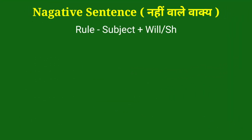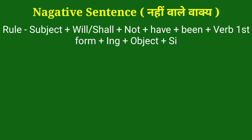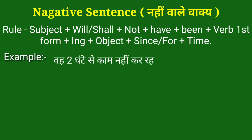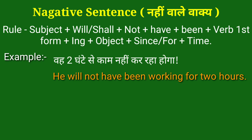Next is the negative sentence — नहीं वाले वाक्य। For making this, we use: Subject + will/shall + not + have + been + verb first form + ing + object + since/for. For example: वह दो घंटे से काम नहीं कर रहा होगा। — He will not have been working for two hours. इस वाक्य में 'he' हमारा subject है, 'will have been' helping verb है, 'not' नहीं के लिए प्रयोग किया गया है, 'working' work की first form + ing है, बाकी हमारा object है।